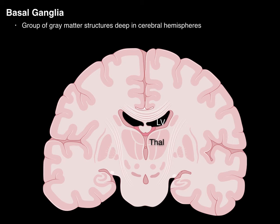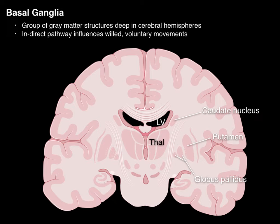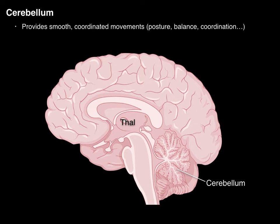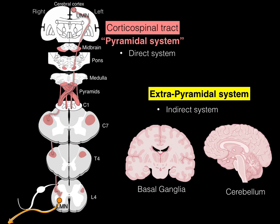The basal ganglia is a group of gray matter structures deep in the cerebral hemispheres. In a coronal section you can see the caudate nucleus on the side of the left ventricle, and the putamen and globus pallidus — three main parts of the basal ganglia that indirectly influence voluntary movements of the corticospinal tract through input to the thalamus. The cerebellum provides smooth, coordinated movements like posture, balance, and coordination by taking input from segmental spinal cord levels and tendons and ligaments, giving that to the thalamus, which then influences the corticospinal tract. The main thing: a pyramidal system (direct) and an extrapyramidal system (indirect).